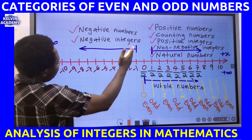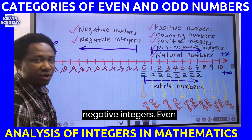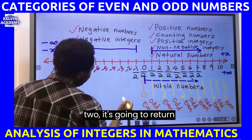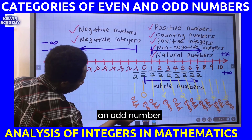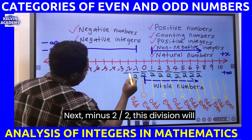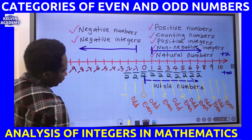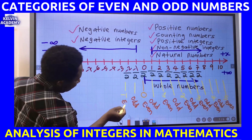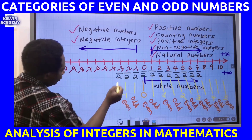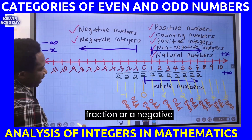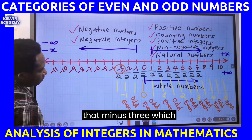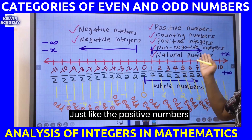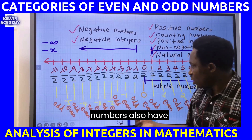Category Three considers negative numbers or negative integers. Even numbers and odd numbers are tested with division by two. Negative one divided by two returns a fraction, so it is an odd number. Minus two divided by two returns minus one, and minus one can be found on the number line, so minus two is an even number. Minus three divided by two returns a fraction or negative decimal, so minus three is an odd number.